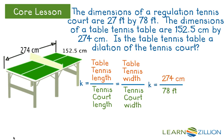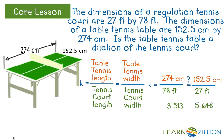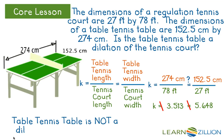So let's look at that. If we look at their lengths, we would have 274 centimeters to 78 feet, and we need to figure out if that's equal to 152.5 centimeters to 27 feet. You do not need to worry about converting the units because both ratios have the same corresponding units. When you divide each of them, we get K equaling 3.513 and 5.648. Since these are not equal to each other, the K values are not the same, and the table tennis table is not a dilation of the tennis court.